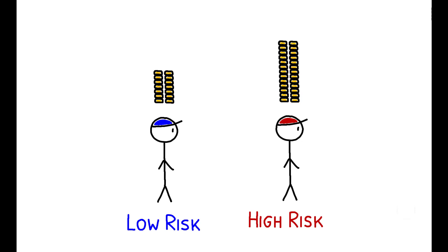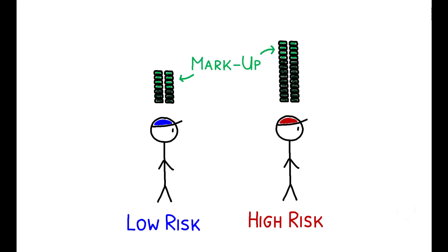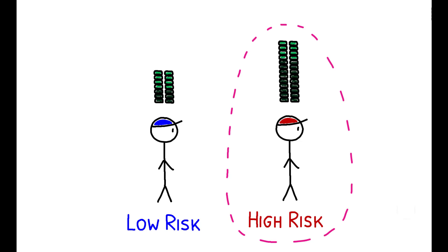The interest rate charged to each borrower can be decomposed into the marginal cost to the bank of making that loan — in other words, the interest rate that allows the bank to just break even — plus a markup. Note that the marginal cost, and thus the overall interest rate, on this loan is higher. This reflects that even in a world where banks made zero profits, riskier borrowers would be charged higher rates to account for the greater likelihood that they fail to repay their loan.